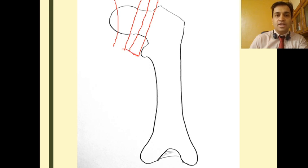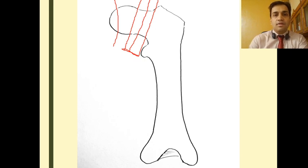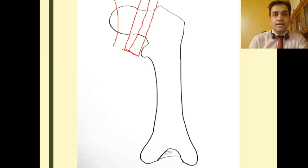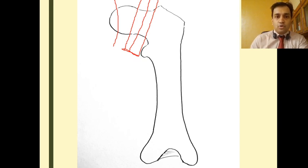These three fracture lines — sub-capital, trans-cervical, and basi-cervical — come under intracapsular neck femur, because the fracture line and the resultant hematoma are constrained within the hip joint capsule.